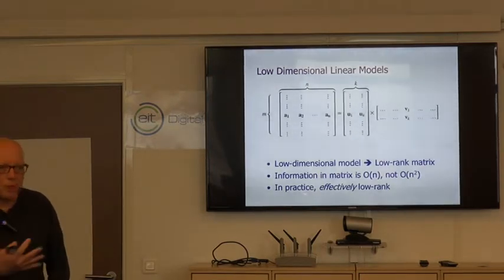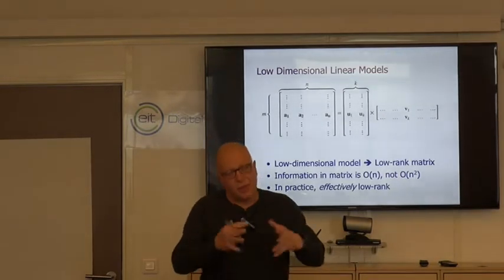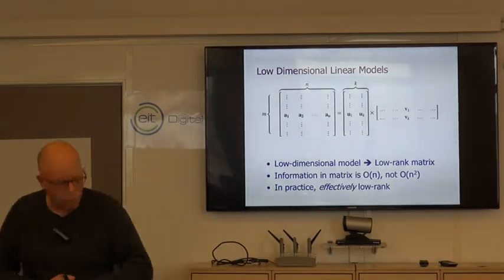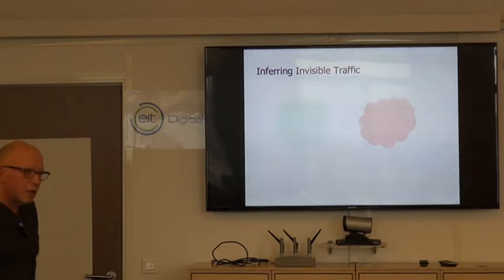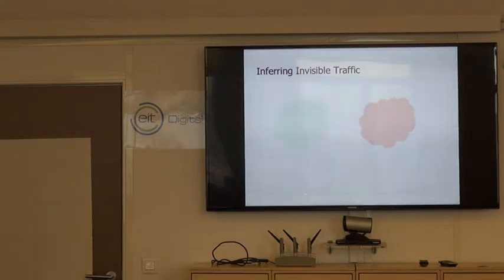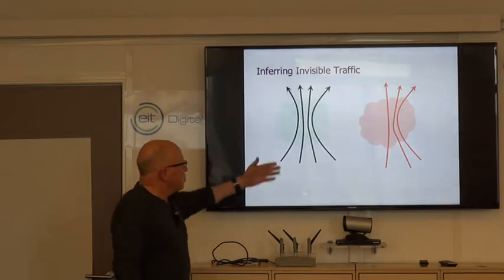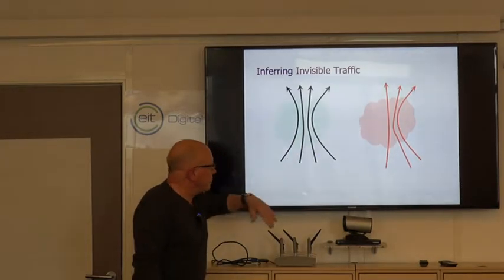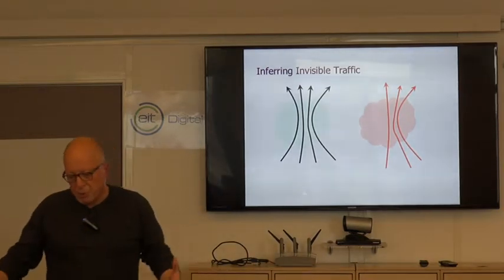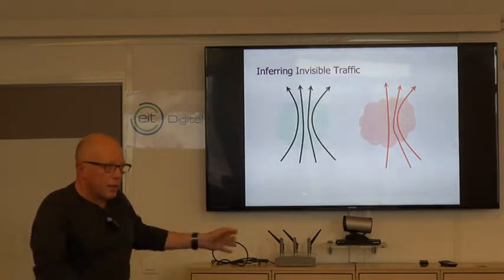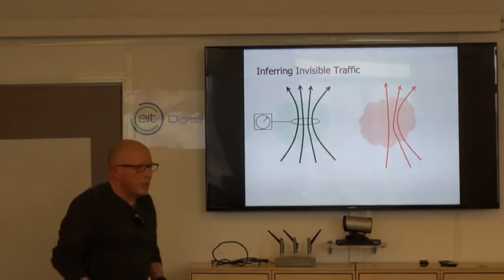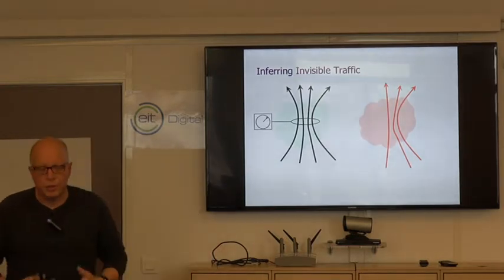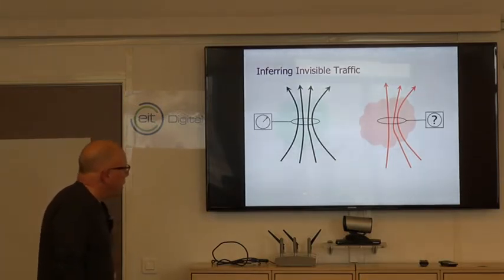With that introduction now I'll talk to you about three things that have relied on low dimensionality in human behavior. The first problem that I'm going to talk about is inferring invisible traffic. I work a lot in measurements of network traffic. There's traffic flowing through each of the ISPs. Each network can measure its own traffic in order to do capacity planning and prediction.